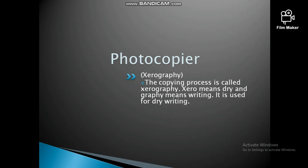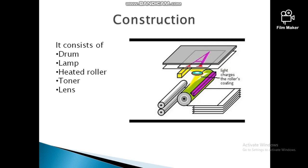The construction of the photocopier consists of a rolling drum, lamp, a dry toner, and the heated roller. The main thing of this photocopier is the drum or rolling drum. That is the heart of this machine.